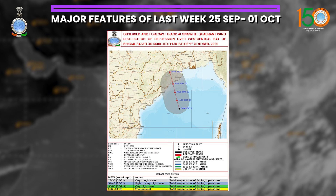This system caused extremely heavy rainfall at isolated places over Konkan and Goa, Gujarat region, Saurashtra and Kutch on 29th September, and also over East Rajasthan on 1st October.